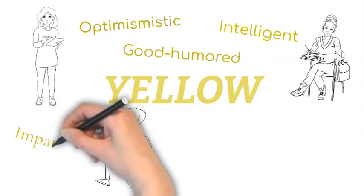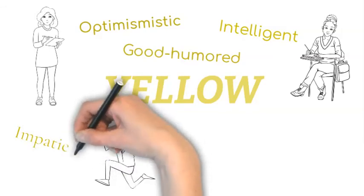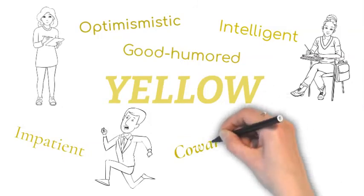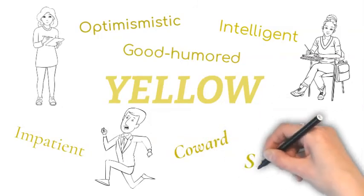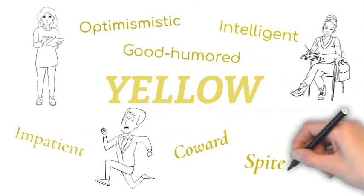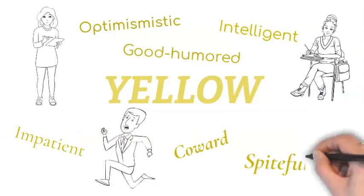The negative traits of people who love yellow are being critical and judgmental, being overly analytical, being impatient and impulsive, being egotistical, have an inferiority complex, spiteful, coward, deceitful, non-emotional, and lacking of compassion.